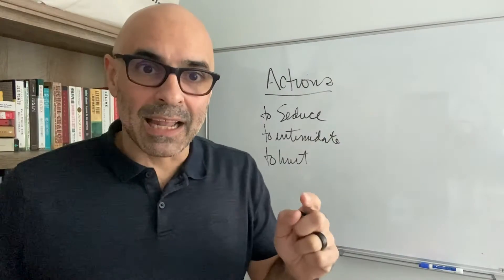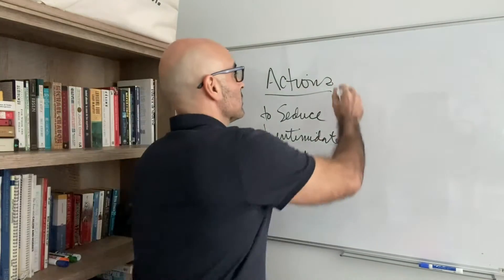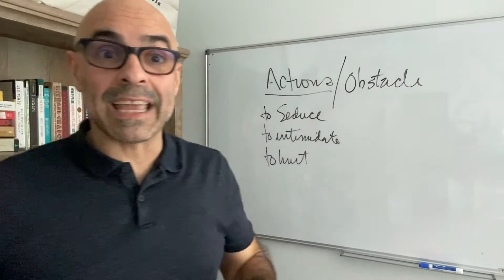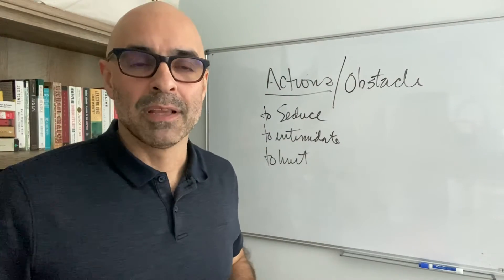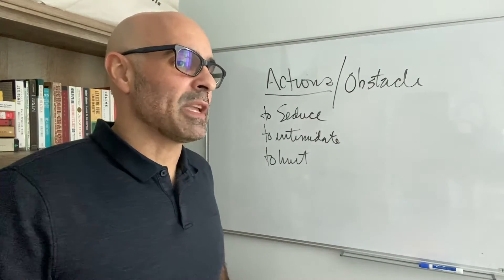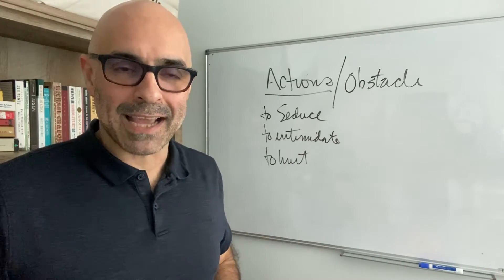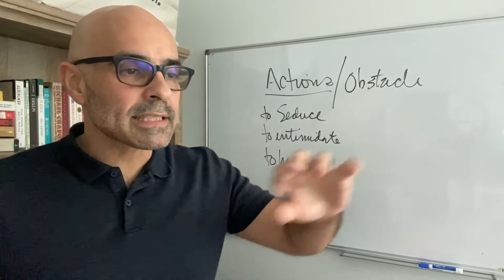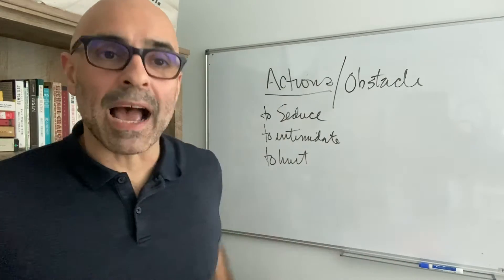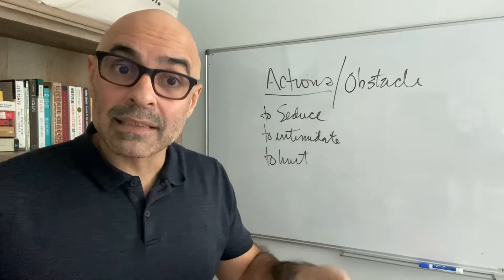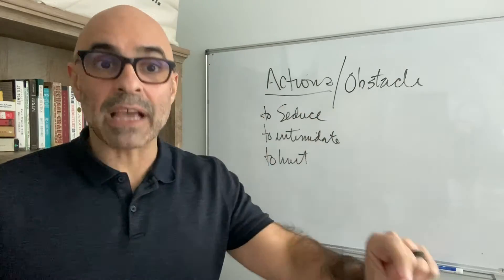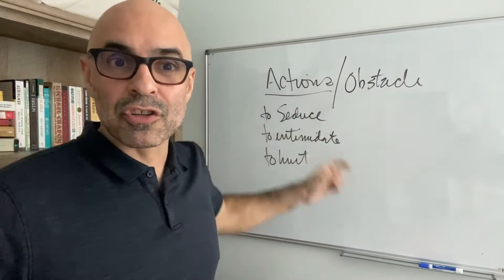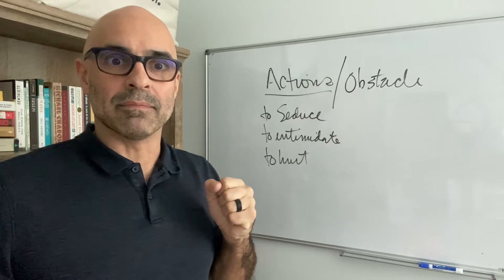Now, the second element that I like to give my students is the obstacle, and the obstacle works in direct opposition to the action. So for example, let's say I have a scene between Jack and Rose — I'm going to use the names from the movie Titanic just because they're easy to remember. I say to Rose: you're playing a scene with Jack, and Jack has a big diamond in his jacket pocket, and your objective is to get that diamond. That's the objective for the scene. Now, what action are you going to play? You're going to play the action to seduce — you're going to seduce that diamond off of him.